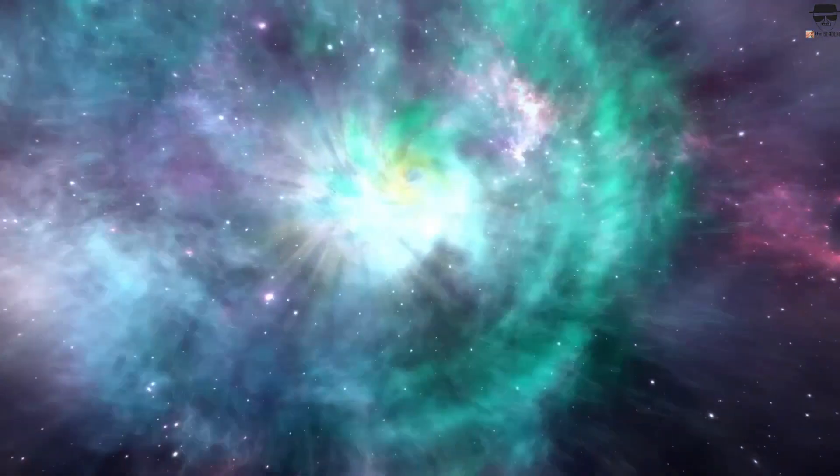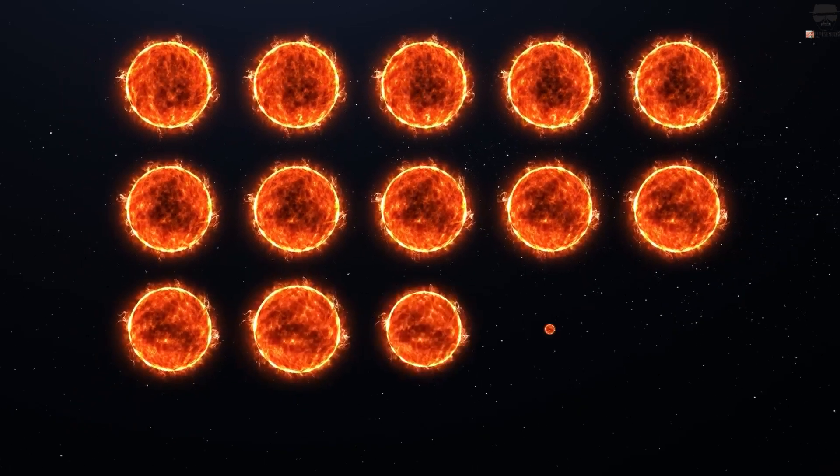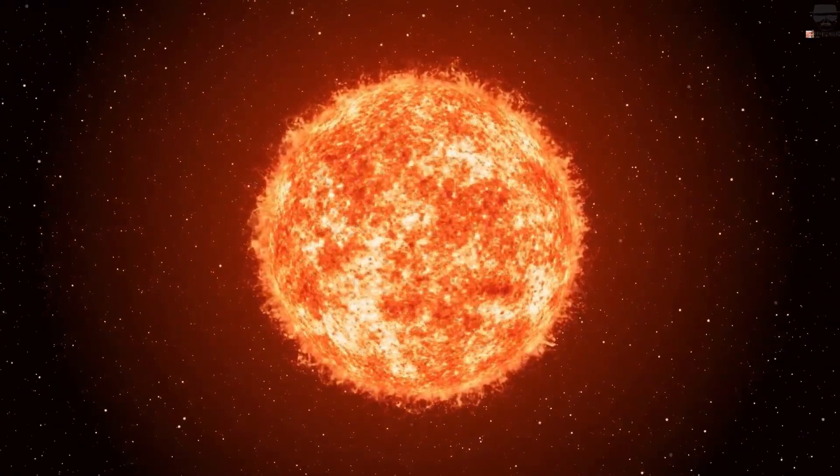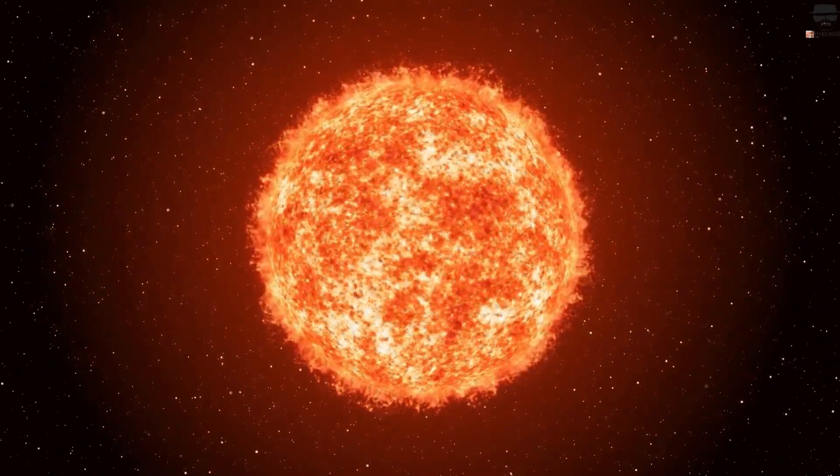It's difficult to imagine the scale of this. An object totaling about 20 solar masses, spread out over the volume of Jupiter's orbit, whose inner core is comparable to, and more massive than, the size of the Sun, suddenly begins to rapidly collapse.